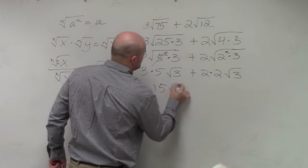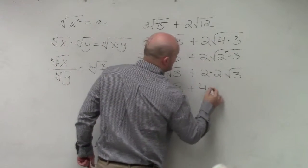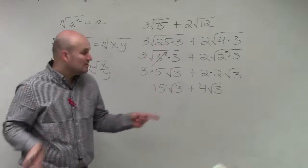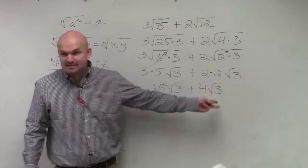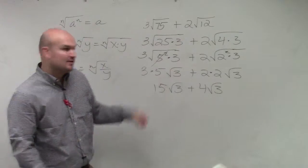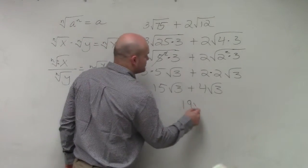So now I have 15 square root of 3 plus 4 square root of 3. Now, do you guys see, Joanna, that the index is the same and the radicands are the same? So now I can just add my coefficients, which would be 19 square root of 3.